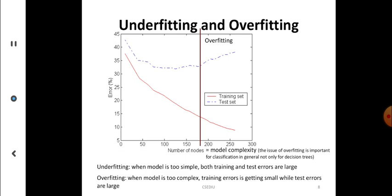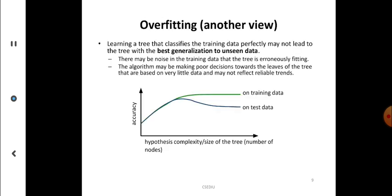Underfitting and overfitting: one is a downtrend as we move across samples where performance decreases, and the other is a balanced trip. Underfitting is when the model is too simple — both training and test errors are large, because the model cannot cover all different cases. Overfitting is when the model is too complex — training error is small but test error is large. Overfitting is to be avoided.